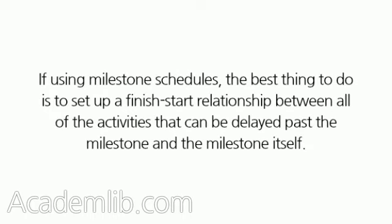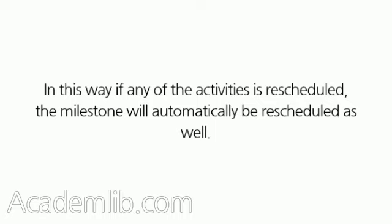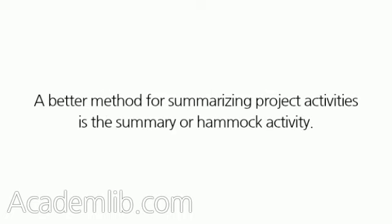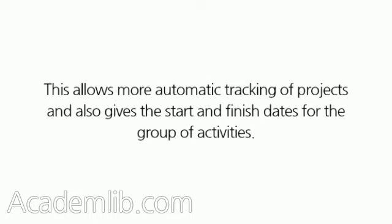If using milestone schedules, the best thing to do is to set up a finish-start relationship between all of the activities that can be delayed past the milestone and the milestone itself. In this way, if any of the activities is rescheduled, the milestone will automatically be rescheduled as well. A better method for summarizing project activities is the summary or hammock activity, which allows more automatic tracking of projects and also gives the start and finish dates for the group of activities.